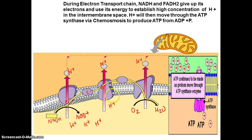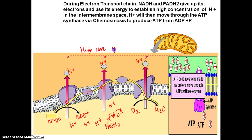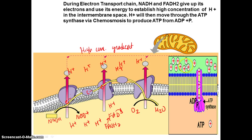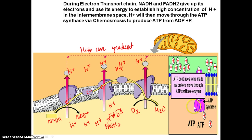FADH2 also comes in a little later on the electron transport chain, gives up its electrons, and becomes FAD. The whole purpose of the electron transport chain is to use all this energy to create a high concentration gradient of hydrogen ions or protons in the intermembrane space.